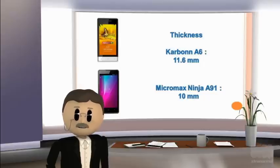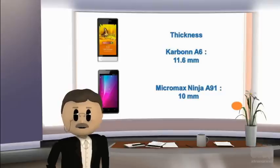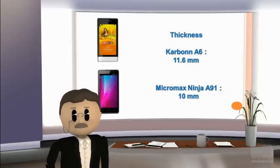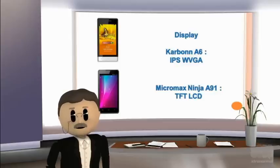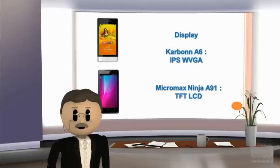Thickness of Karbonn A6 is 11.6 mm, and thickness of Micromax Ninja A91 is 10 mm. Display of Karbonn A6 is IPS VGA, and display of Micromax Ninja A91 is TFT LCD.